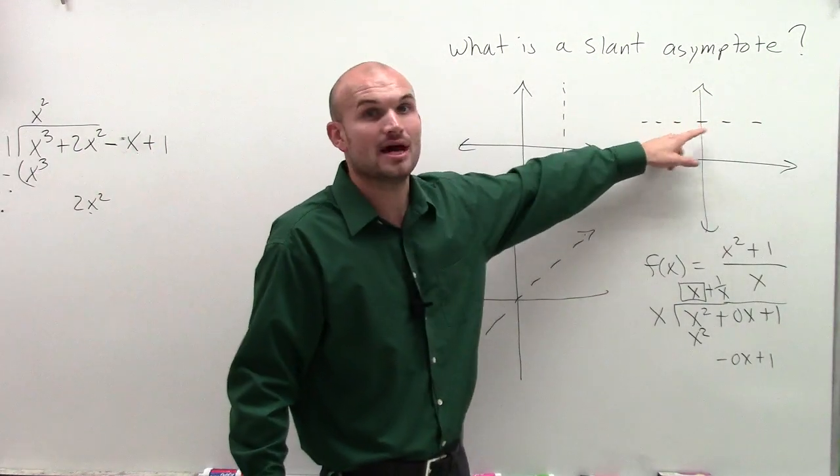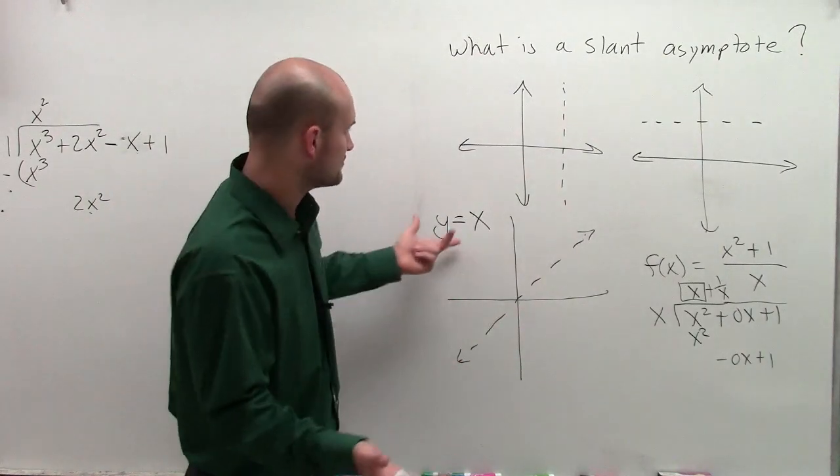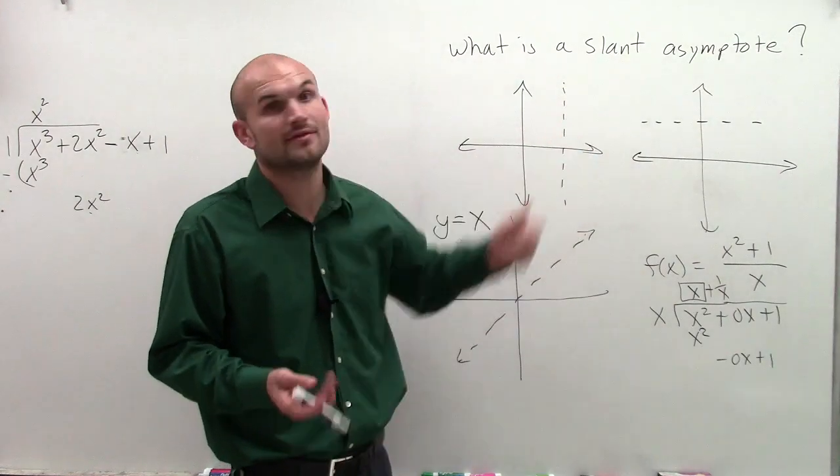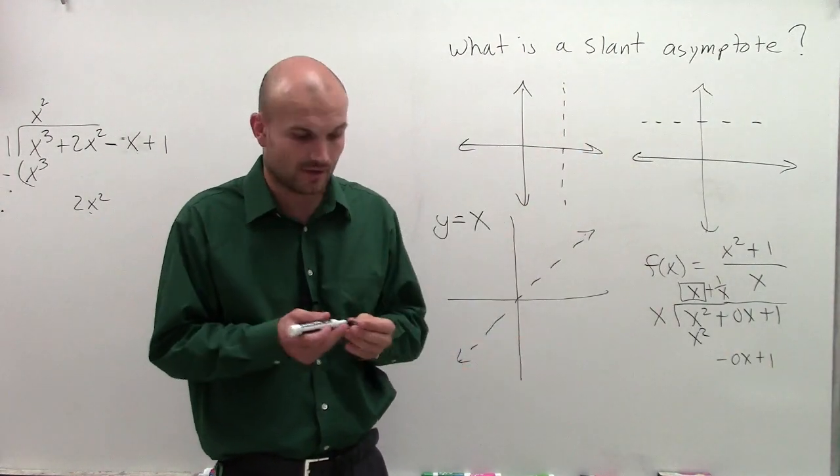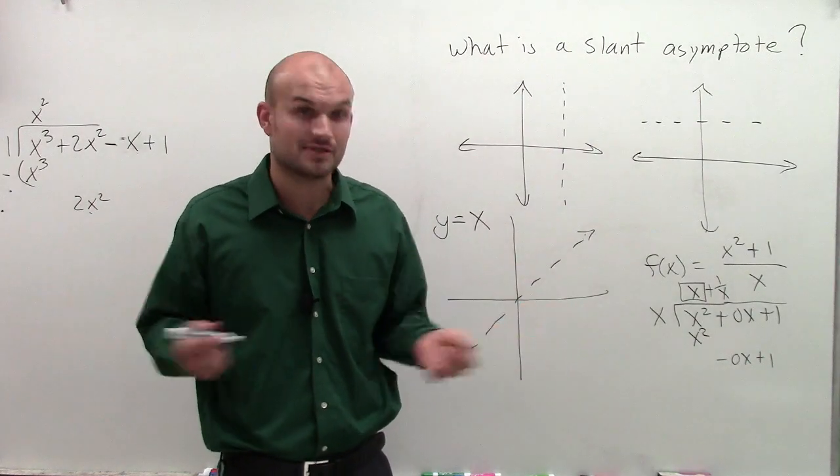But in this case, rather than it being a number, it's now going to be a line that's going to have a slope rather than a slope of 0. So here you're going to have a slope - this one has a 1. You could also have a linear equation.